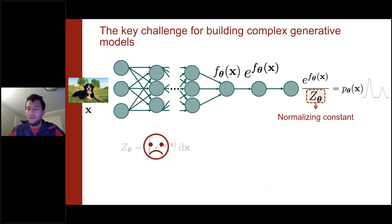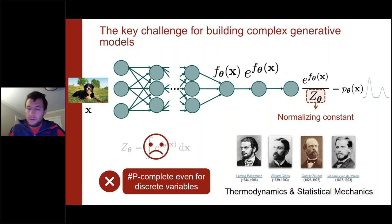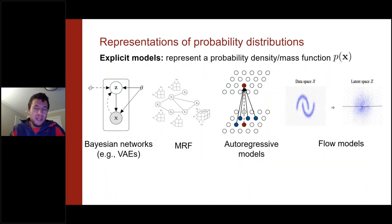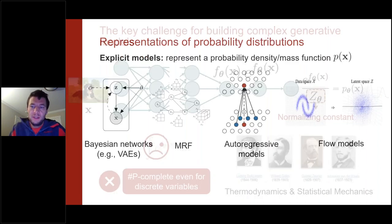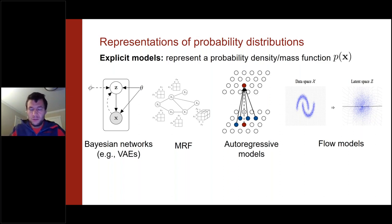In practice, computing this partition function involves a high-dimensional integral that is provably hard to evaluate — a problem studied for a long time, including in statistical physics leading to Nobel Prizes. There are two ways to get around this. One way is to restrict ourselves to neural network architectures with special structure so we can still evaluate the normalization constant in closed form — classic approaches like Bayesian networks, Markov random fields, and deep models like autoregressive models and flow models.